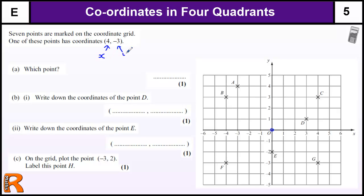The second value of the coordinate is the y value. If the number is positive, we go to the right if it's x, or up if it's y. If it's a negative value, we go to the left if it's x, and down if it's y. So we've got to go across 4 and down 3. We go across to 4 because x is 4, and then down 3 to minus 3. And that's Point G.